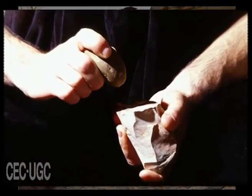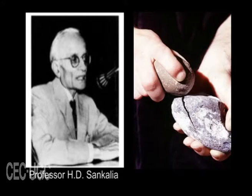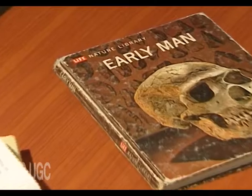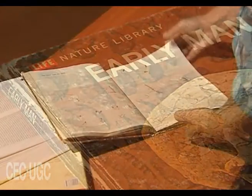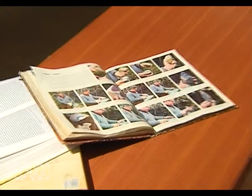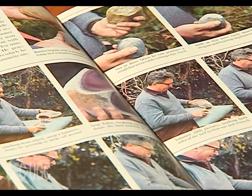According to Professor H.D. Sankalia, methods could be inferred by studying the stone tools themselves, trying to imitate them today, and observing primitive or semi-primitive people making similar tools and using them. In the book Early Man, published by Life Nature Library in 1970, there are photographs showing the making of stone tools like chopping tools, Acheulean axes, and laurel leaf points by François Bordes.